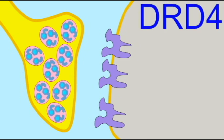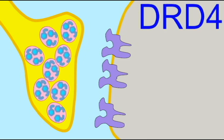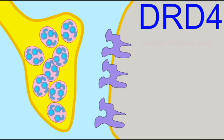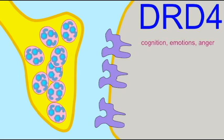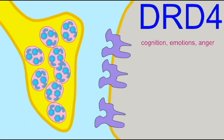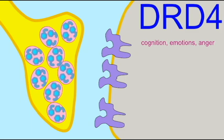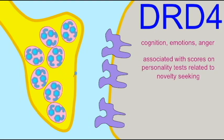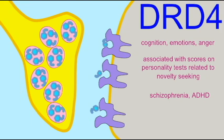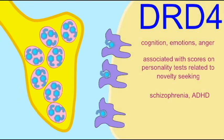Dopamine receptor D4, or DRD4, receptors are expressed in the limbic system and affect cognition, emotions, and anger. This gene is one of the most variable human genes known, with most of the variation occurring in the third exon. Different alleles of DRD4 are associated with scores on personality tests related to the trait of novelty seeking. High scores are correlated with impulsive and exploratory behaviors, while low scores are associated with being stoic, loyal, and frugal. Increased expression of receptors may be a factor in schizophrenia, and certain alleles may affect attention deficit disorder.